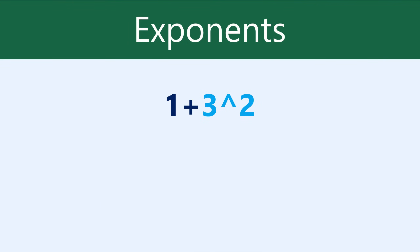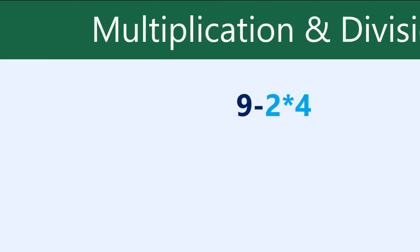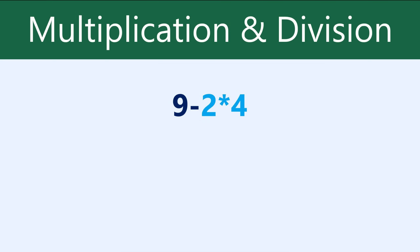This formula contains an exponent, 3 to the power of 2. We'll need to calculate that first, and then we can do the addition. If you have multiplication or division, that'll come next. Here we multiply 2 times 4 to get 8, and 9 minus 8 equals 1.